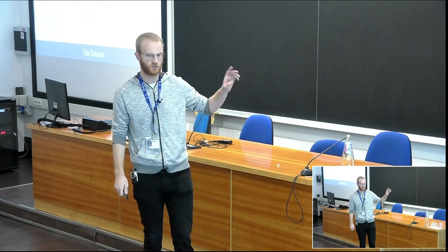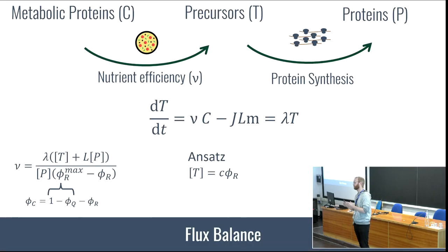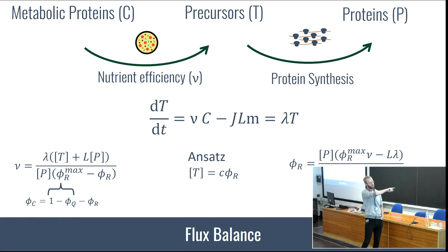Now we know the protein production, so we can write down how the number of proteins changes with time, and we can relate the growth rate with the current. One other important ingredient that Hosanna touched on is the flux balance: how your metabolic proteins, depending on your nutrients, create precursors with a certain nutrient efficiency, and these nutrients get incorporated into protein via protein synthesis. Writing this down mathematically means you have influx and outflux of nutrients, and they have to be equal to the growth rate times the number of precursors.